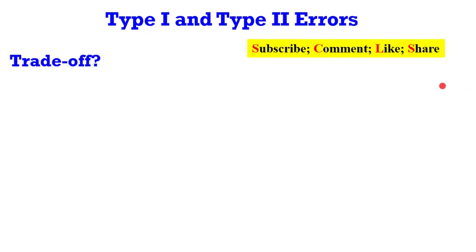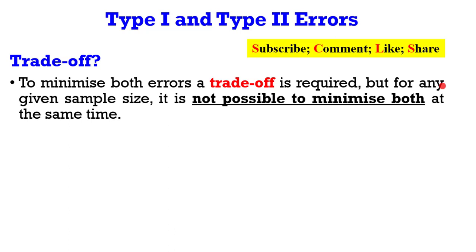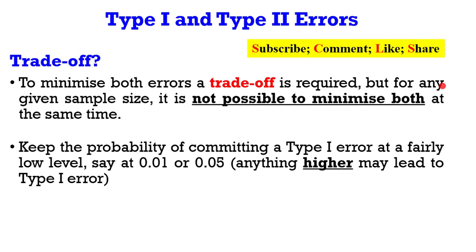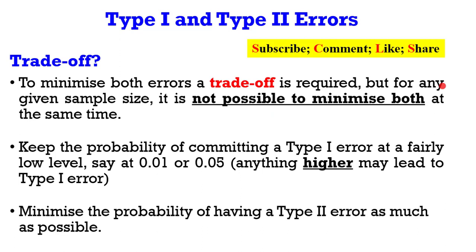What is the trade-off in committing a type 1 and a type 2 error? To minimize both errors, a trade-off is required, but for any given sample size it is not possible to minimize both errors at the same time. So keep the probability of committing a type 1 error at a fairly low level — say at 1% or 5%. Anything higher than that will lead you to commit a type 1 error. Likewise, minimize the probability of committing a type 2 error as much as you can.